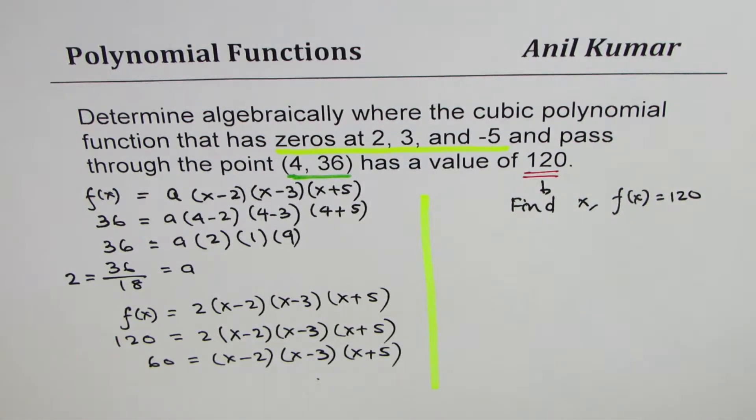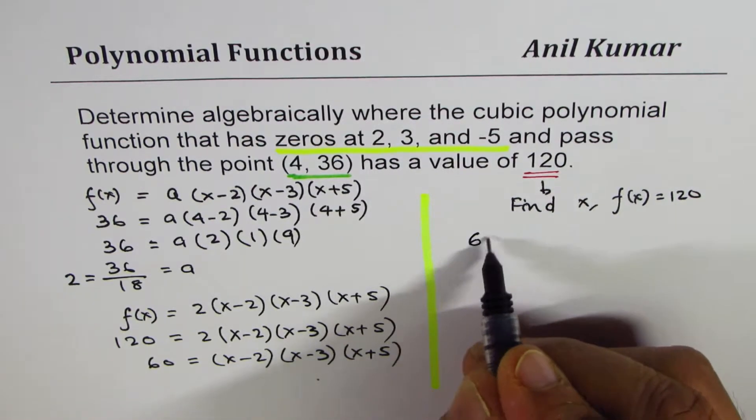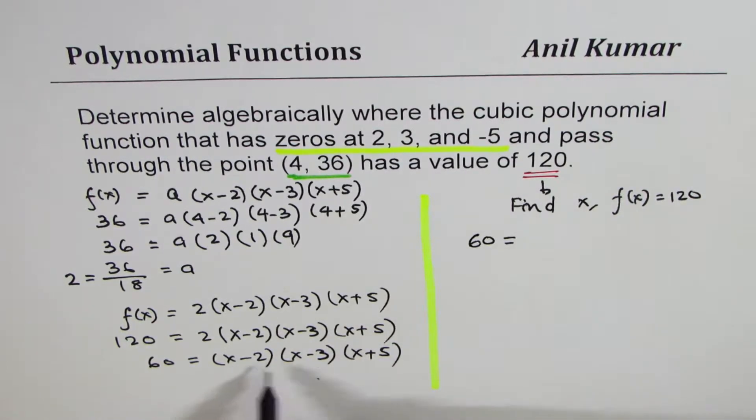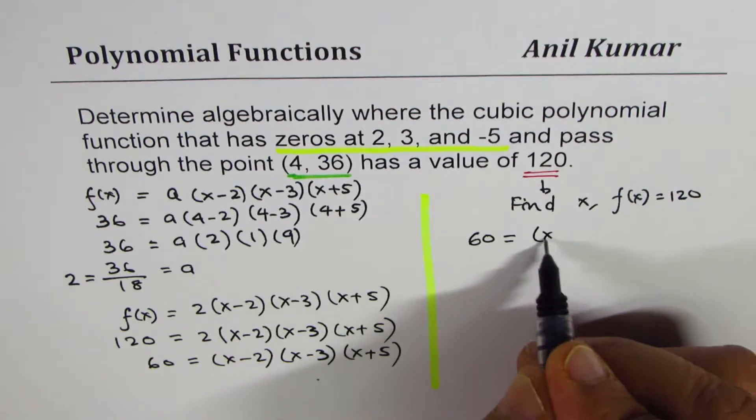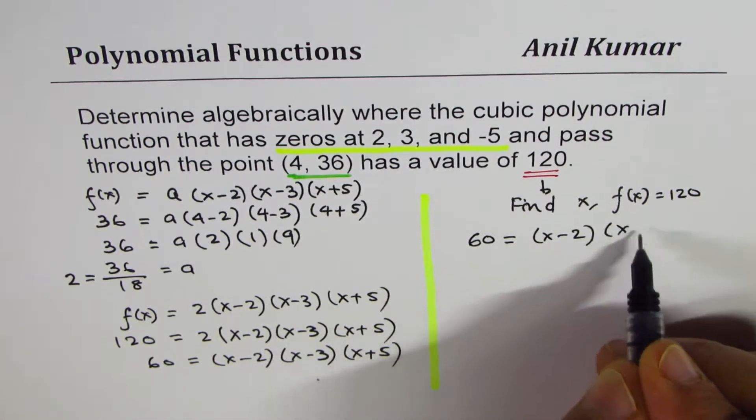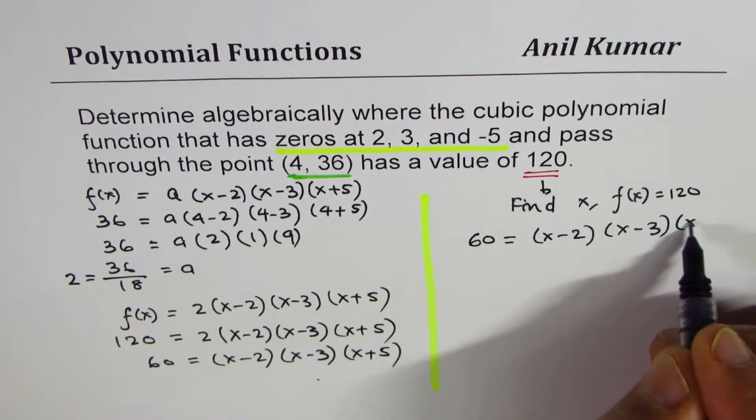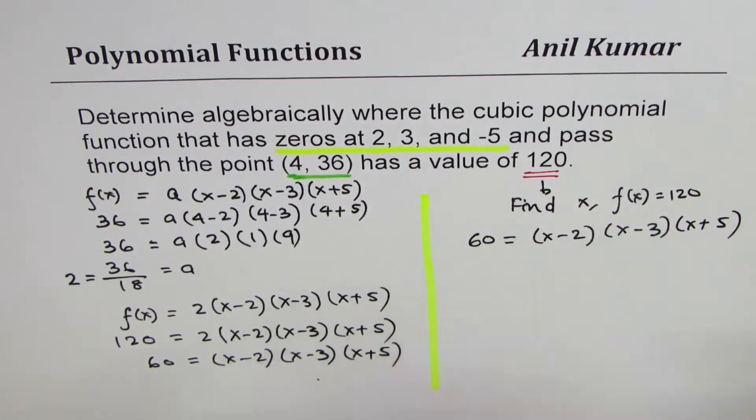So till now, what we have done is, we found the equation, and now the question is, we have to find the value of x. So let me rewrite the equation here. We want product of three factors, which are (x - 2), (x - 3), and (x + 5), as equal to 60.